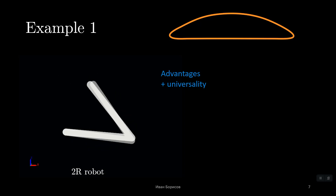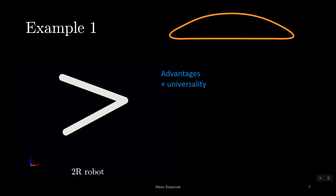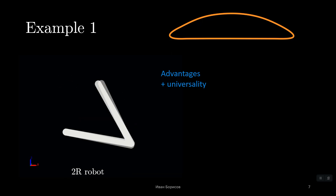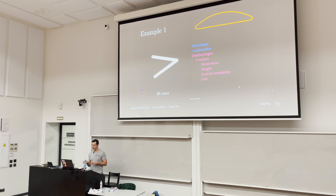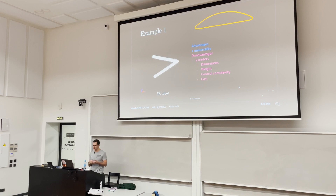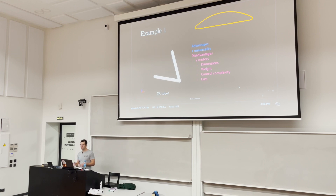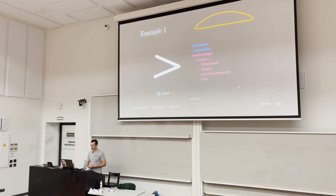We can use this kind of mechanism to generate any kind of planar trajectory within the workspace. That's a plus — an advantage. But the disadvantage is that we need two motors and two sensors. Two motors means we need to control them, and the controller would be complex. There are also energy costs, and we need to buy two motors and two sensors. So from those points of view, it could be not very efficient.